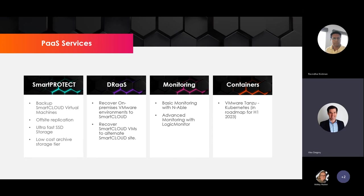DR as a Service is a great use case for our cloud platform. You can DR the VMs that sit in our cloud platform, or you can DR VMs from your own on-premise VMware deployment — replicating them into the Smart Cloud Platform and just paying for the storage you're using. If you ever need to use that DR, you spin up the VM and pay for it running at that point in time. We offer five-minute incremental billing, so you're not paying for a whole month just to test a failover.